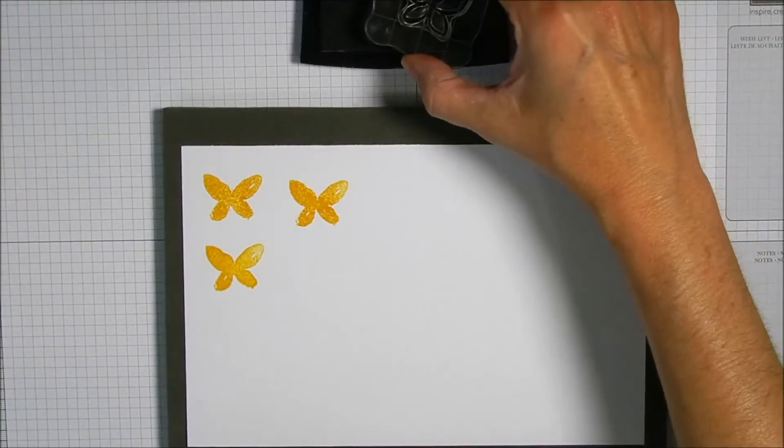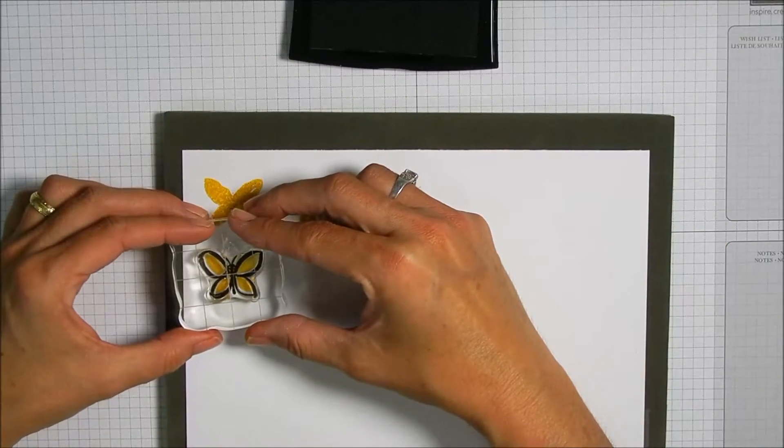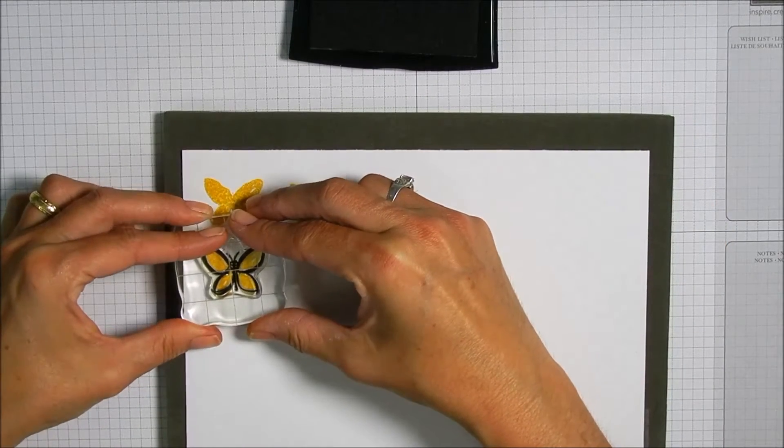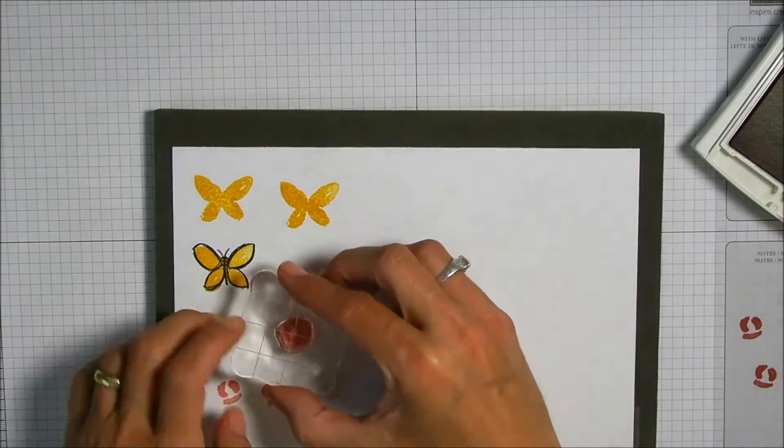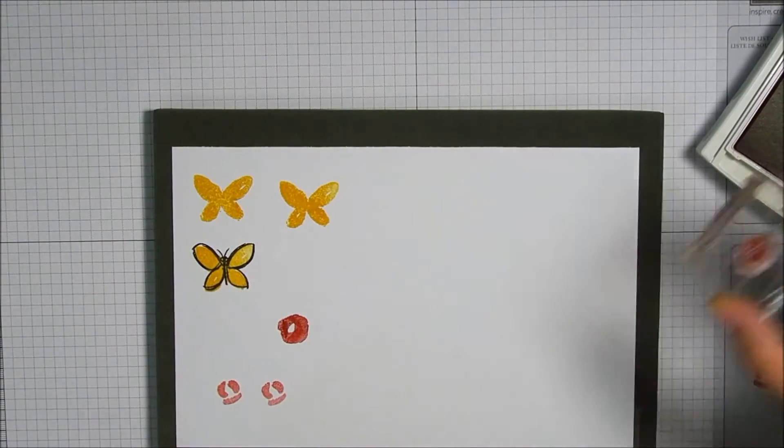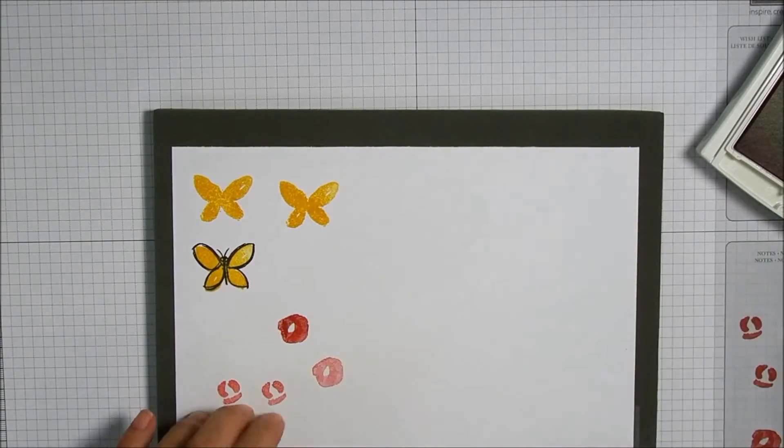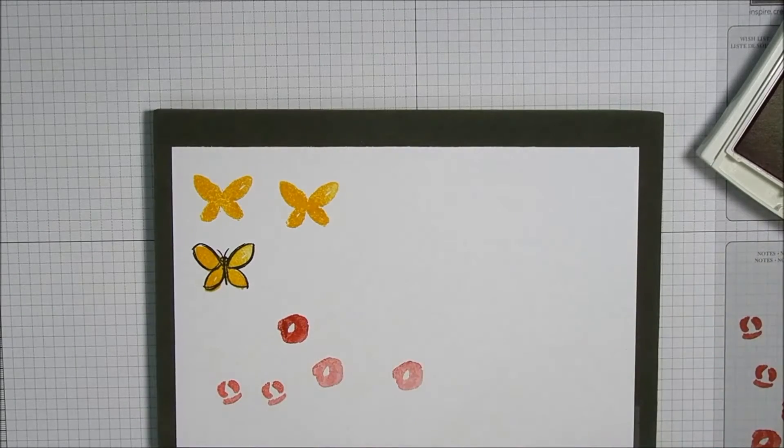Now I'm going to be using the outline image for the butterfly with some VersaFine Onyx Black ink, just because when you use a pigment ink over a dye ink it doesn't spread out into the ink underneath it.